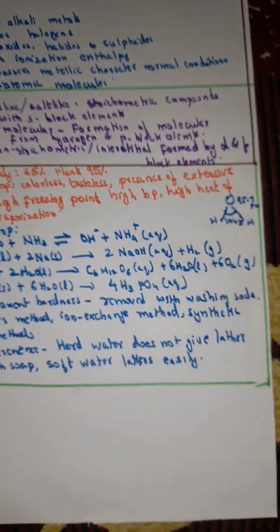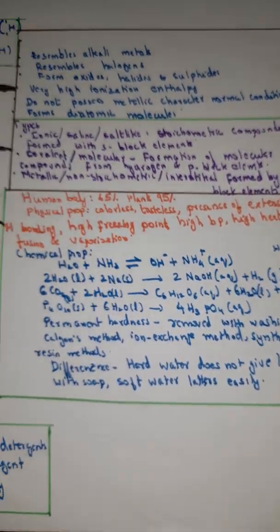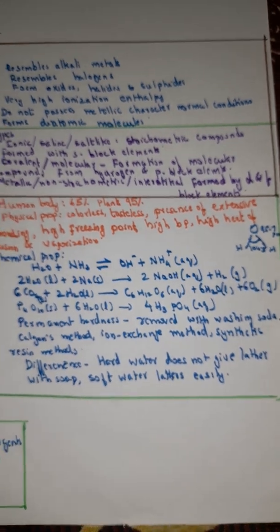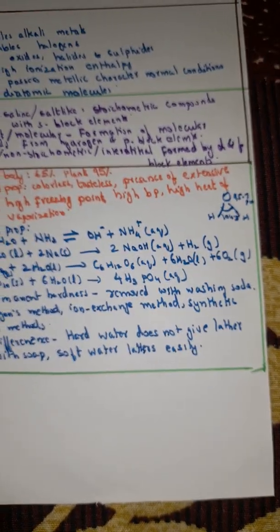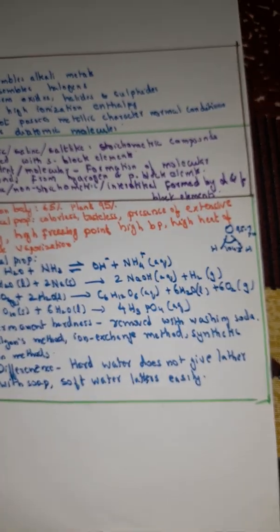Permanent hardness is removed with washing soda. Then Calgon's method which we learnt already, ion exchange method, synthetic resin methods. Differences between hard water and soft water.